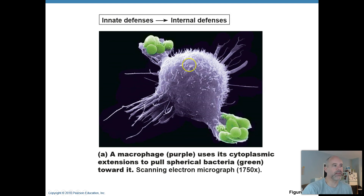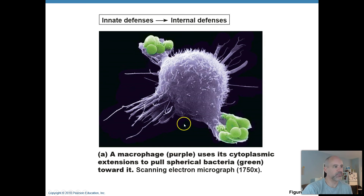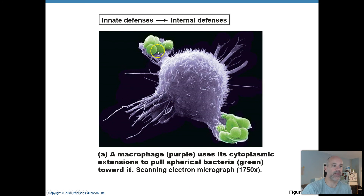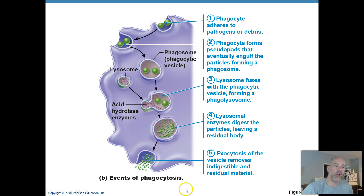Phagocytosis can be pretty dramatic. This image was generated with an electron microscope, magnified 1,750 times — much more powerful than a typical light microscope you'd find in a college laboratory. These images get colorized. Whenever you see these highly magnified images, they're almost always made with a scanning electron microscope. This purple cell is a macrophage that has attached to bacteria that are round or spherical in shape, shown in green. It's in the process of engulfing those, taking them inside and breaking them up with toxic chemicals and digestive enzymes. That process is called phagocytosis.